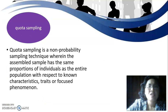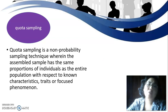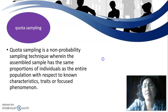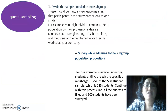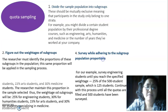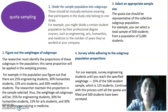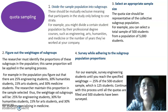Quota sampling is a non-probability sampling technique where the assembled sample has the same proportion of individuals as the entire population with respect to certain characteristics or factors. There are several steps. First, divide the population into subgroups that are mutually exclusive, meaning participants belong to only one stratum. For example, you might define a student population by professional degree courses such as engineering, arts, humanities, and medicine, or by years worked at a company.